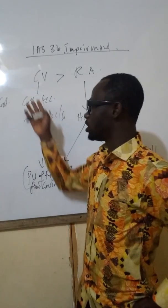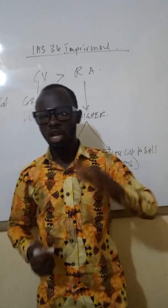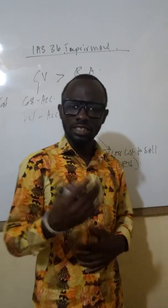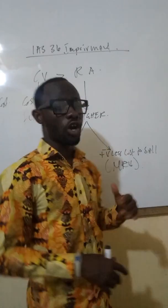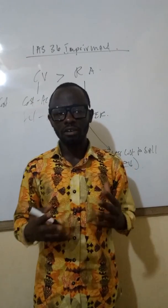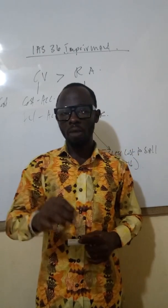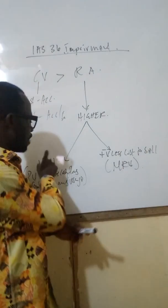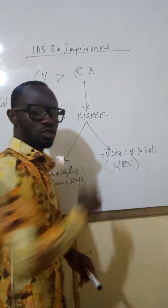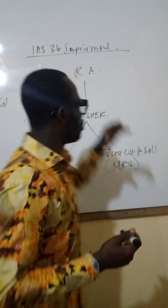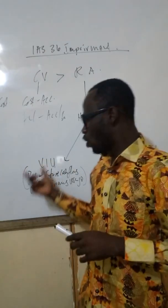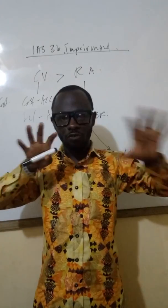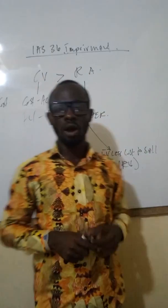Even though the cost model exists, many businesses use the revaluation model. So you calculate your carrying value — say it is $2,000 at the end of the fourth year — and then you test to see if the asset has suffered impairment by calculating what we call the recoverable amount. The recoverable amount is simply the higher of the value in use and the fair value less cost to sell.